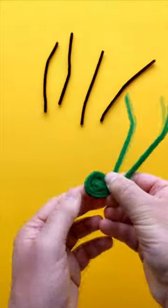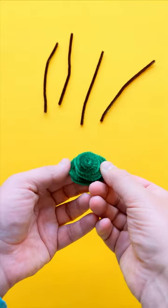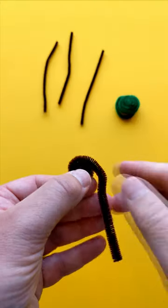Then hold the green pipe cleaners next to each other and twist them around and around like this. This will make a tortoise shell. We still haven't used any glue and we don't need to yet.